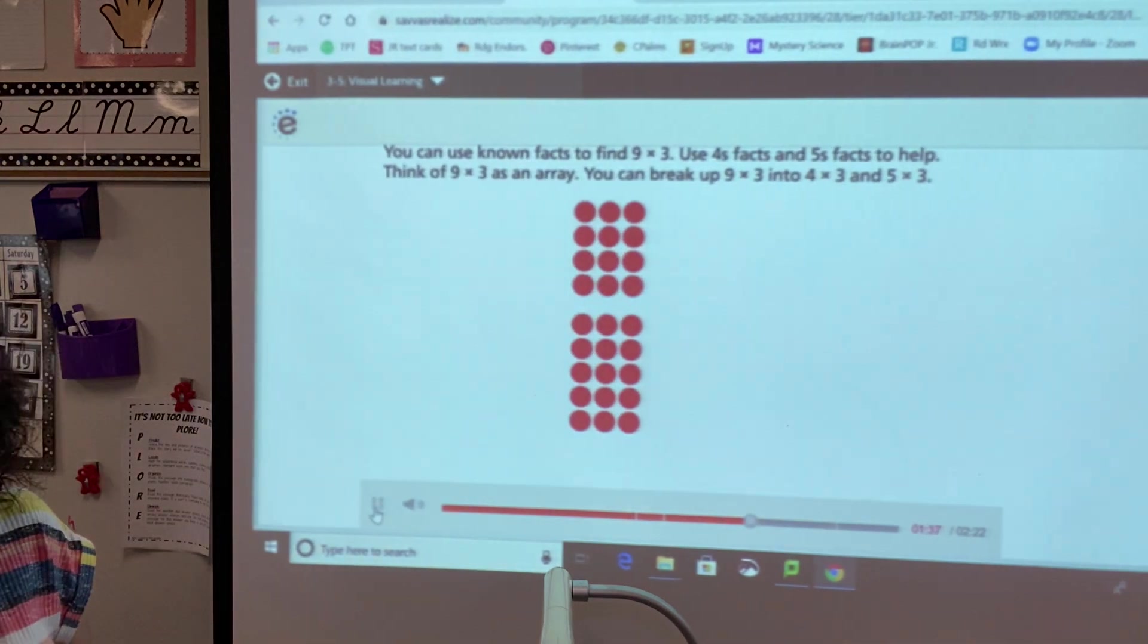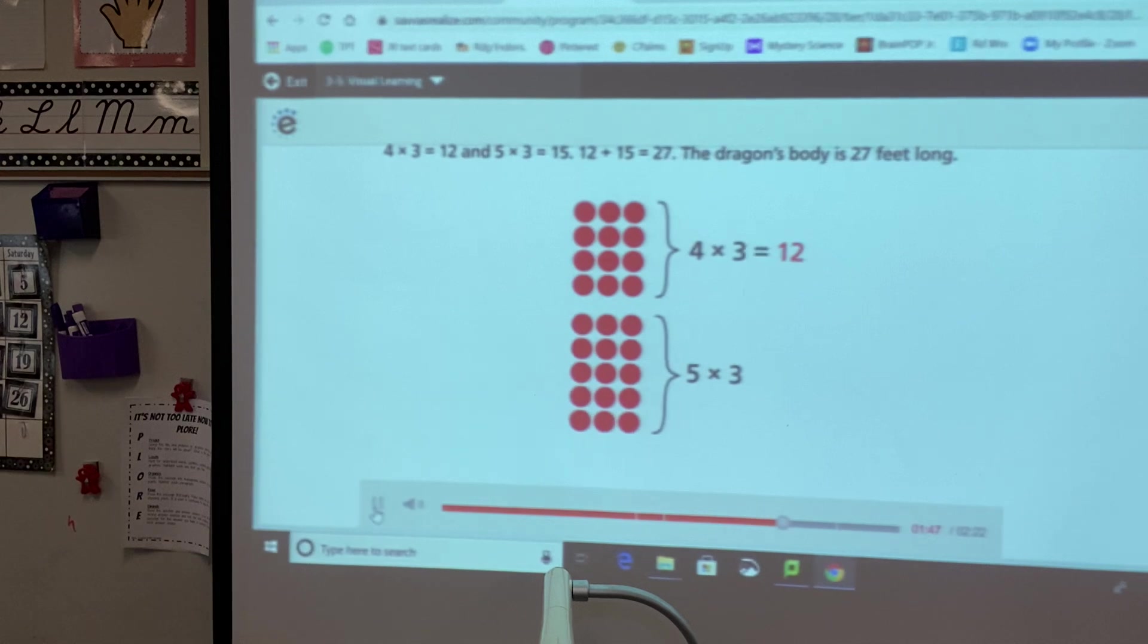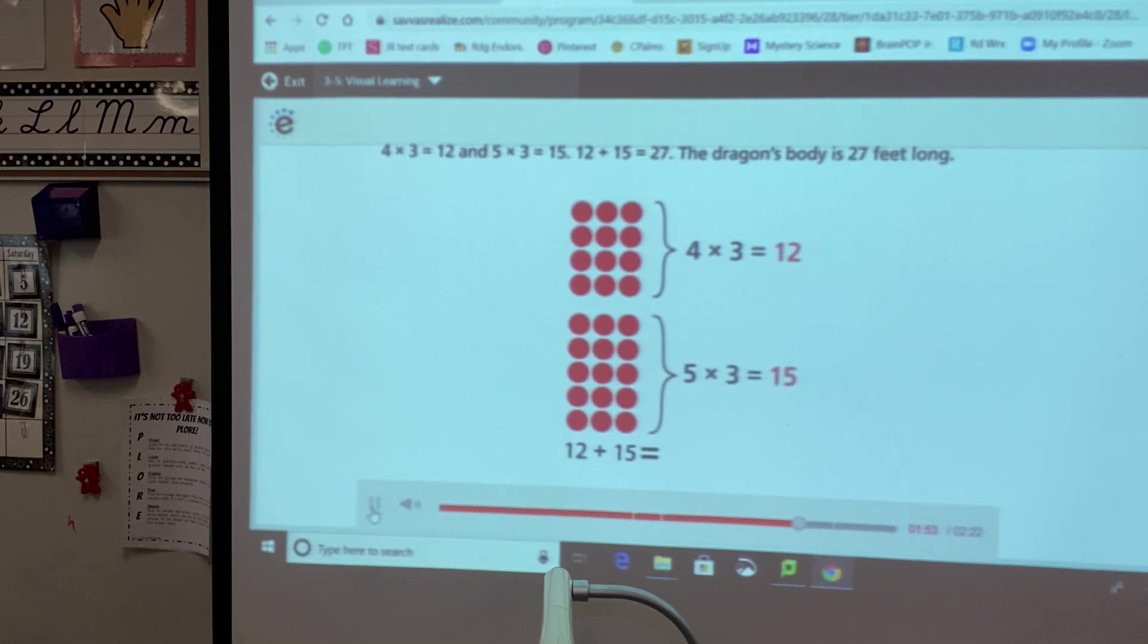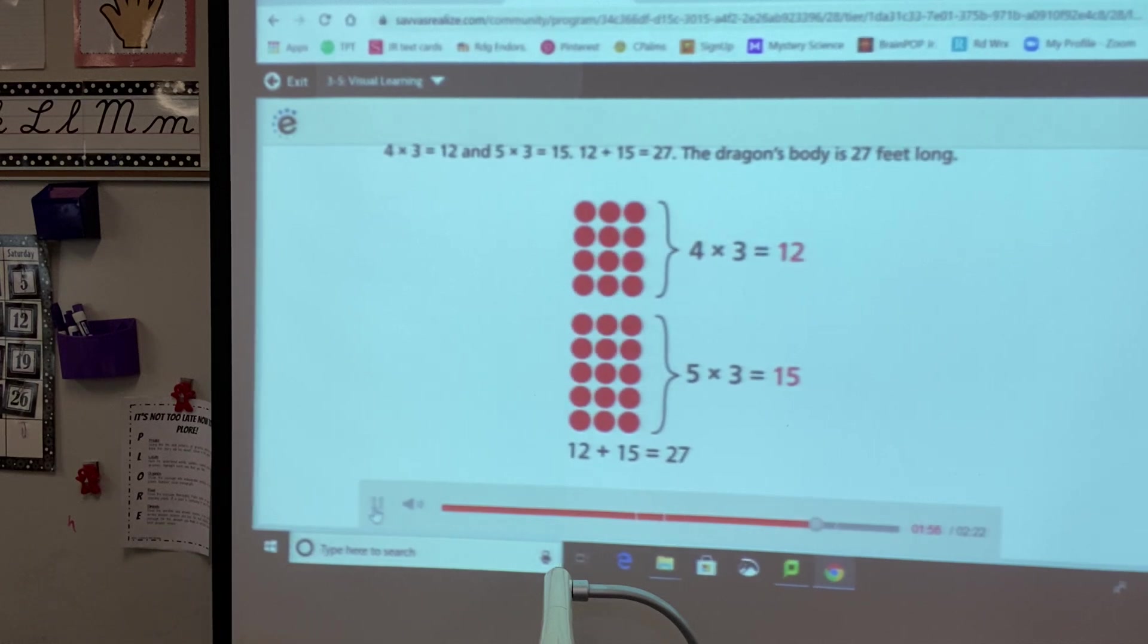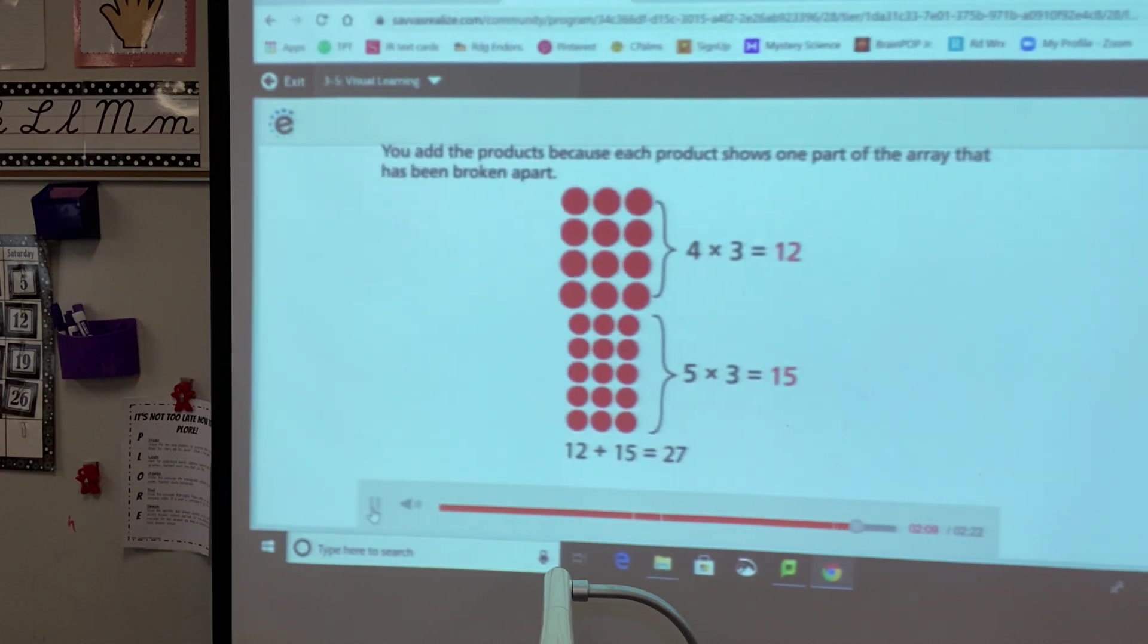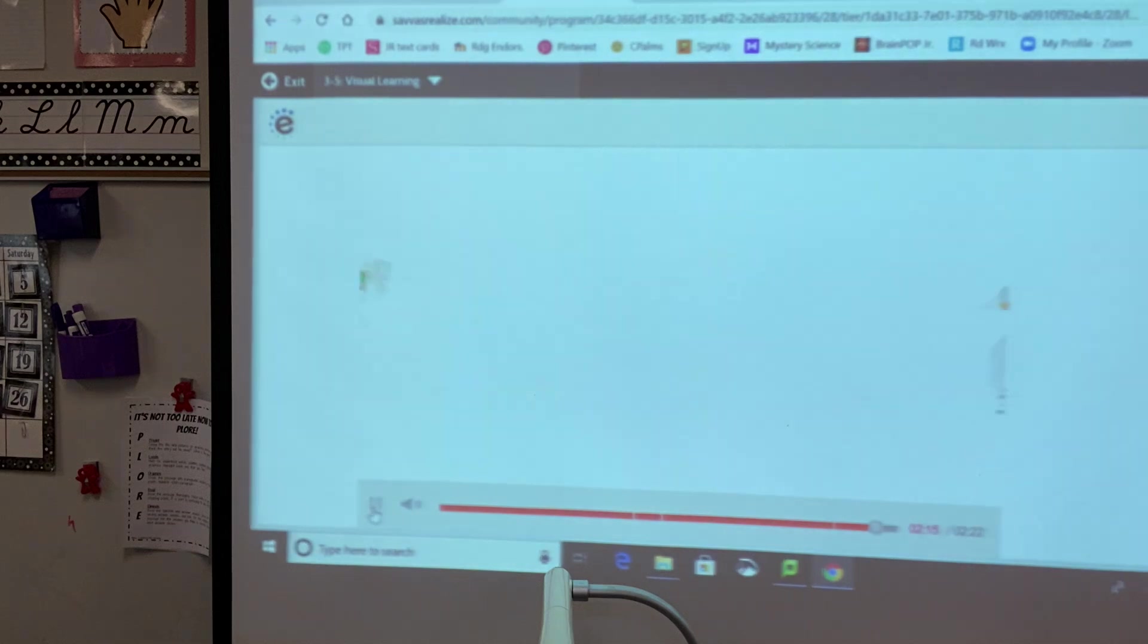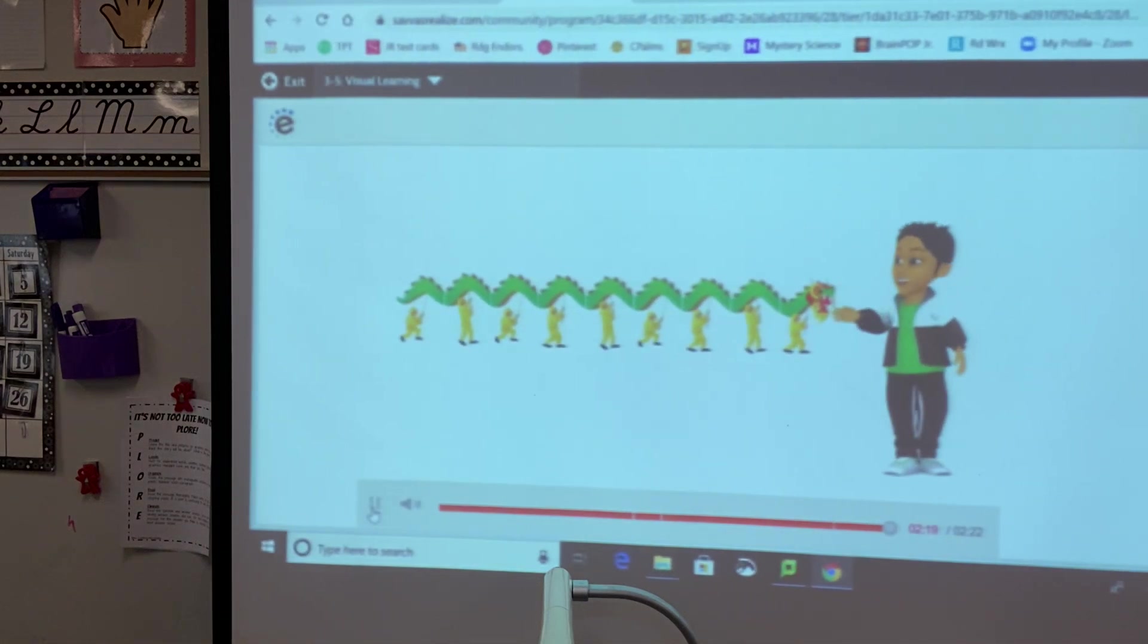You can break up nine times three into four times three and five times three. Four times three equals twelve and five times three equals fifteen. Twelve plus fifteen equals twenty-seven. The dragon's body is twenty-seven feet long. Why do you need to add the products to find the total? You add the products because each product shows one part of the array that has been broken apart.